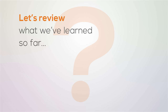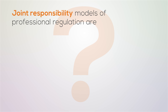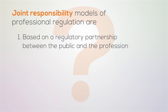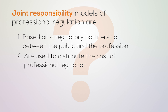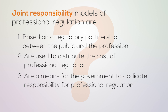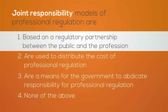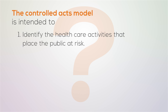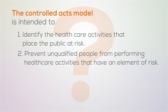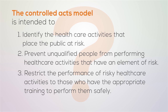Let's review what we've learned so far. Question one: Joint responsibility models of professional regulation are based on — a regulatory partnership between the public and the profession; used to distribute the cost of professional regulation; a means for the government to abdicate responsibility for professional regulation; or none of the above? The correct answer is the first one: joint responsibility models of professional regulation are based on a regulatory partnership between the public and the profession. Question two: The Controlled Acts Model is intended to — identify the health care activities that place the public at risk; prevent unqualified people from performing health care activities that have an element of risk; restrict the performance of risky health care activities to those who have the appropriate training to perform them safely; or all of the above? The answer is all of the above.